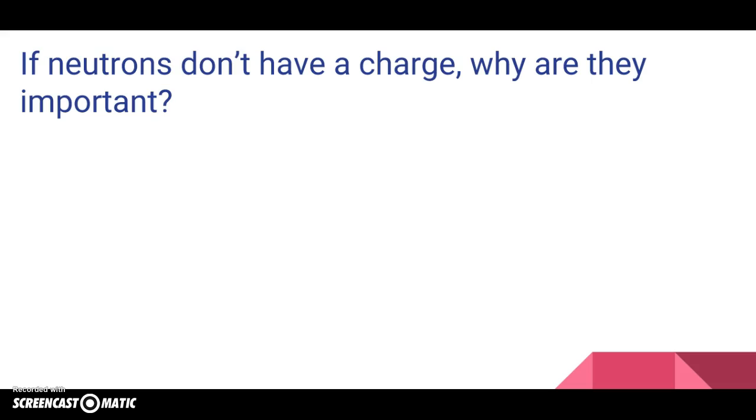Now, neutrons don't have a charge. So if they don't have a charge, why are they important? Well, when we talked about protons having what charge? Positive. And if two positives come together, they do what? They repel. Electrons have what charge? Negative. And if two electrons come together, they repel. If you have a positive and negative, they attract. And that's a huge part on how chemical reactions happen, which is most of the semester.